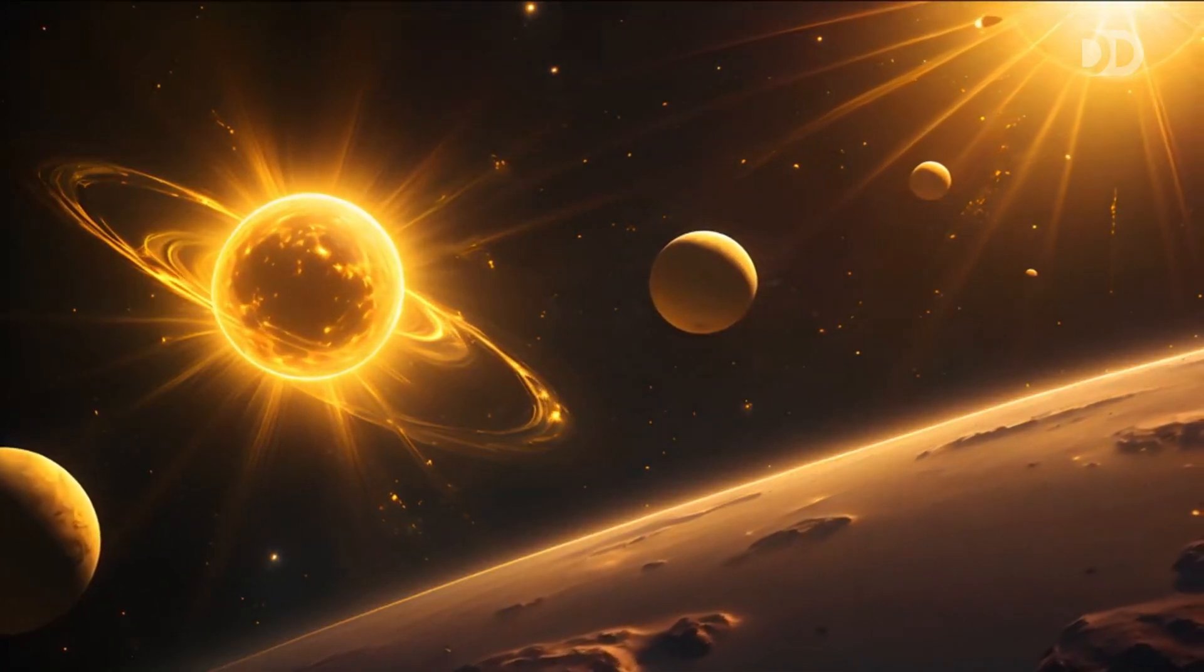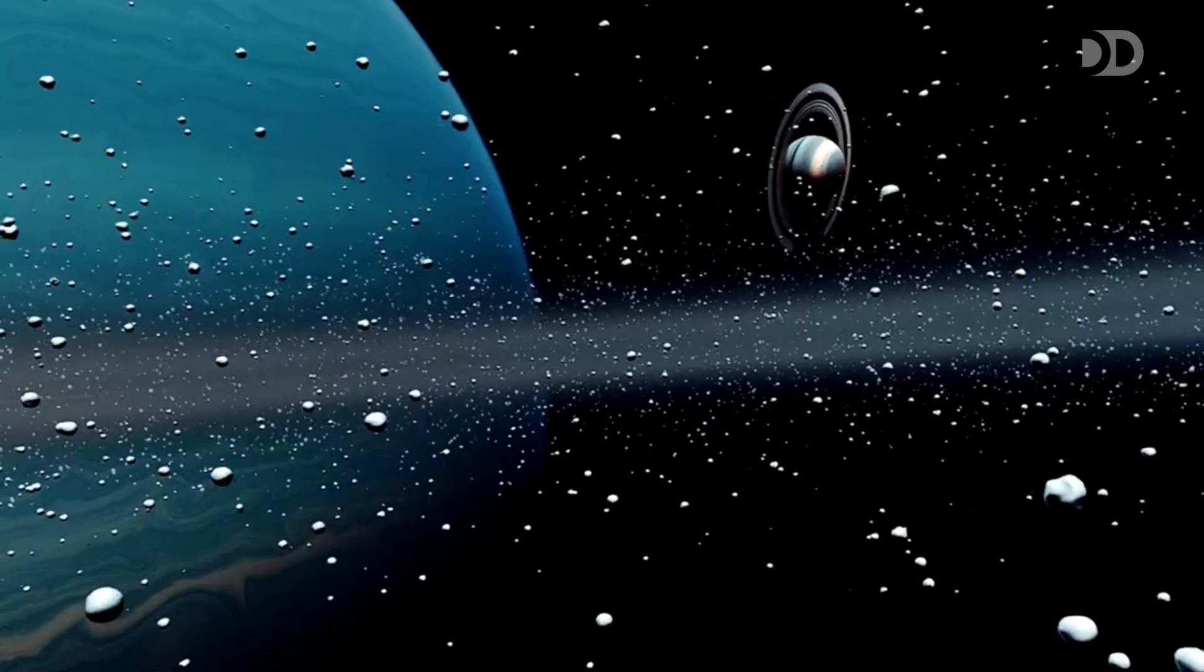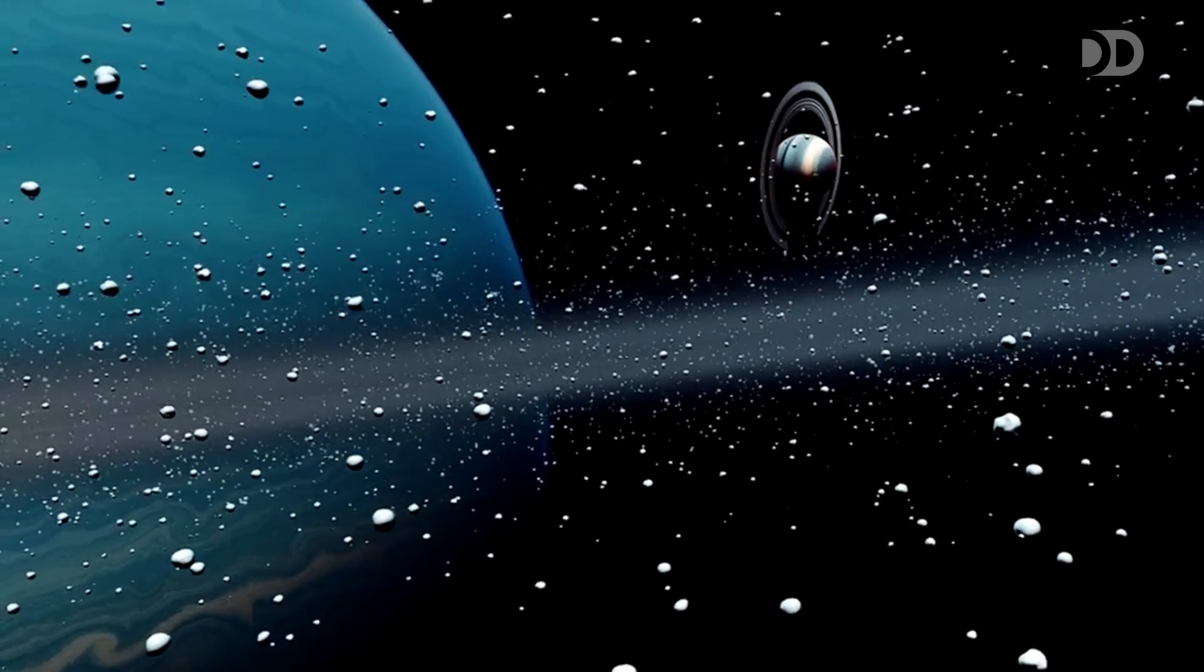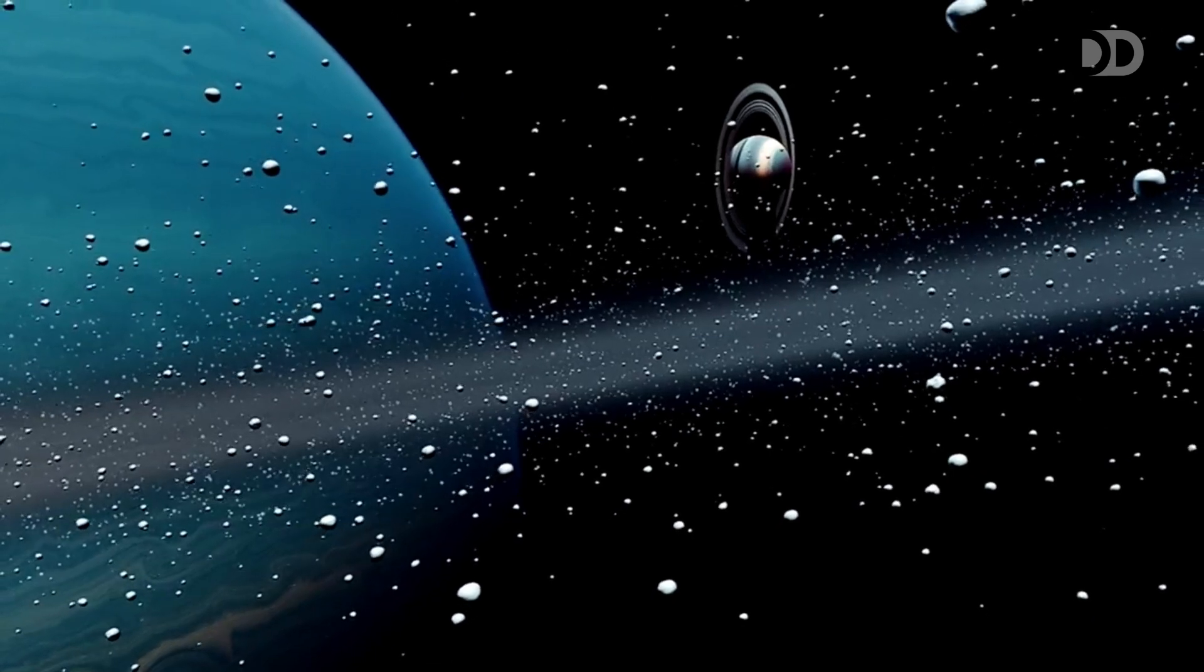Some pieces are as tiny as grains of sand, while others are as large as mountains. The rings are divided into several main sections, each with its own unique structure and composition. Scientists believe they may be remnants of shattered moons or comets, torn apart by Saturn's immense gravity.